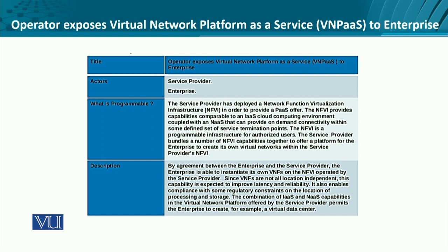We have the service provider and an enterprise which mutually work together. The service provider infrastructure has deployed a network function virtualization infrastructure, offered as a platform as a service. It includes capabilities similar to a cloud environment, providing on-demand connectivity through network as a service infrastructure. This is the programmable infrastructure, and the enterprise creates a virtual data center-like infrastructure on the service provider's infrastructure.